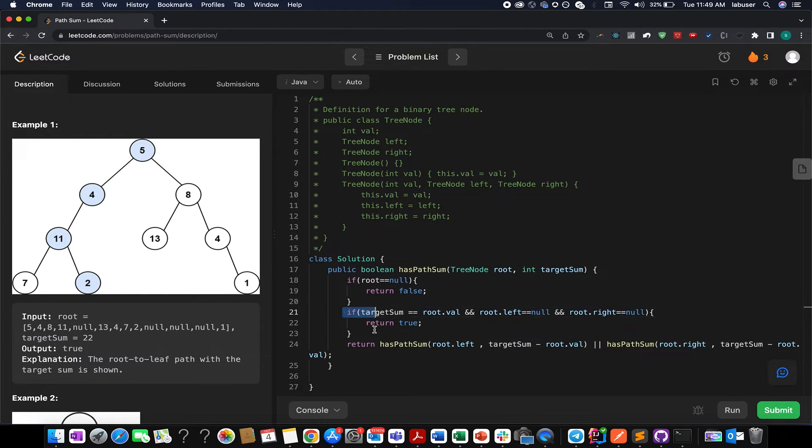Otherwise, I iterate over the left subtree and I reduce the target by target sum minus root.val. Similarly, I iterate over the right subtree. I reduce the target by target sum minus root.val, exactly same in both these iterations. In one case we are iterating over the left subtree, in the other case we are iterating over the right subtree. Let's try and submit this.